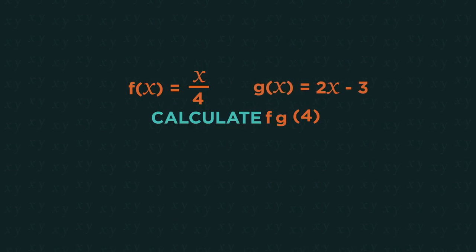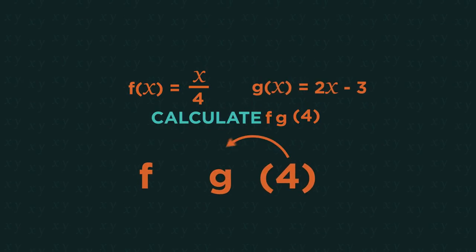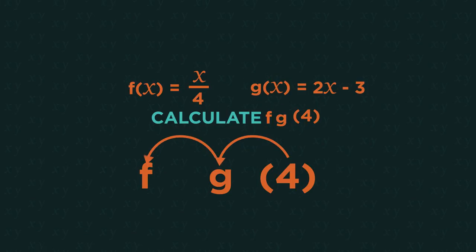And this is where the order really matters. We read backwards for functions. So we put 4 into g, and then the output of that into f.